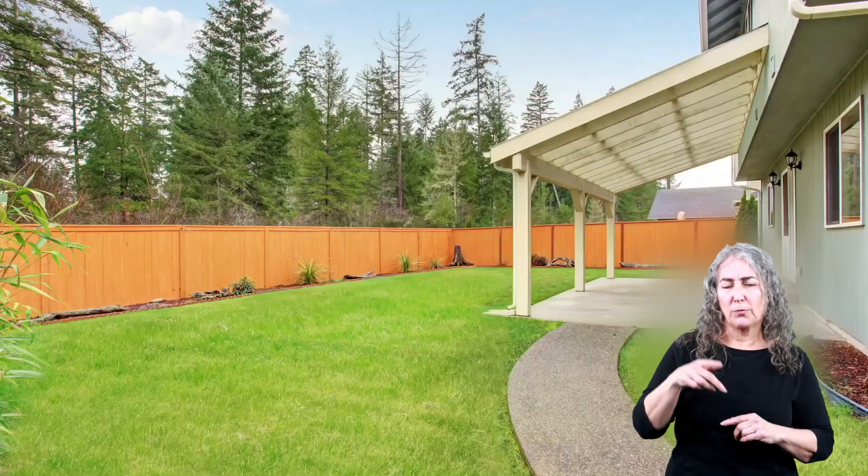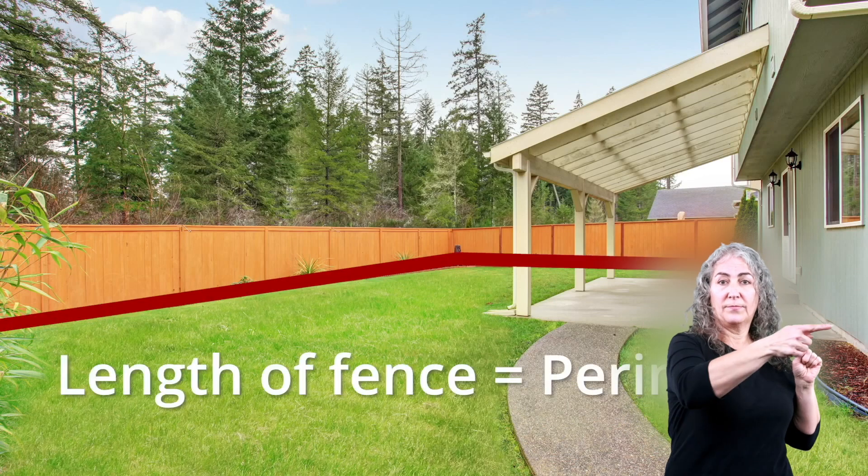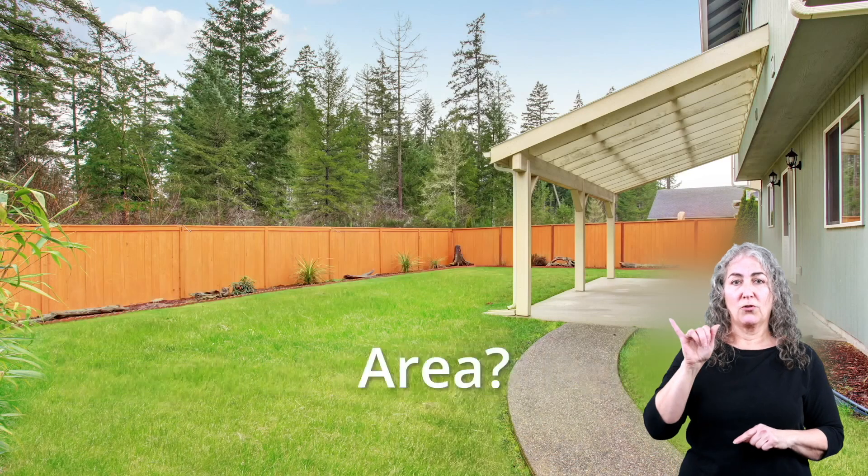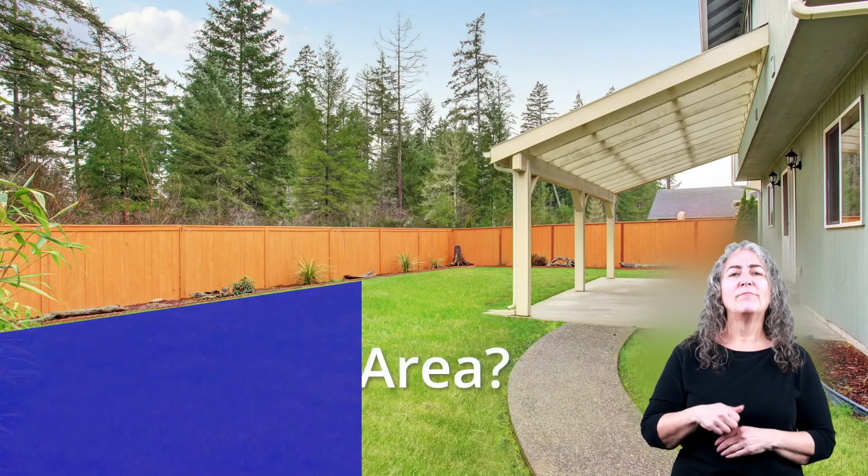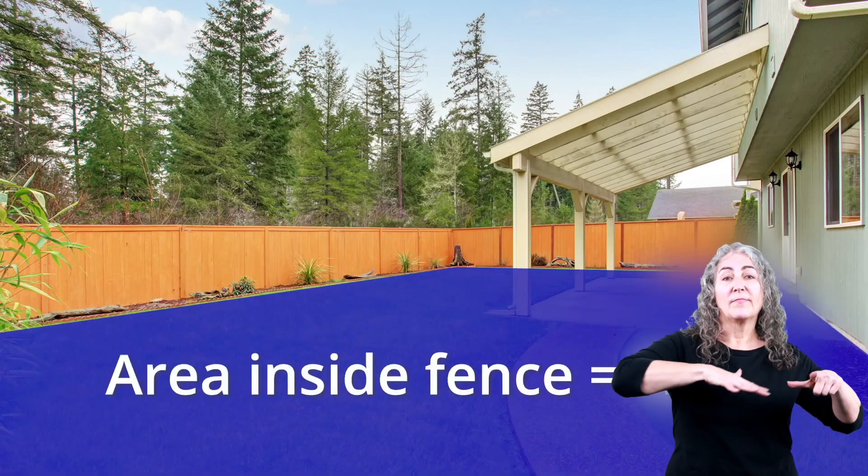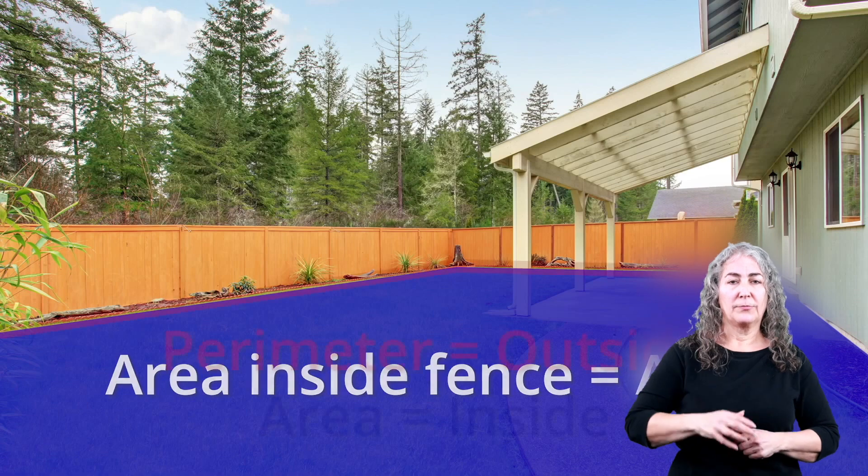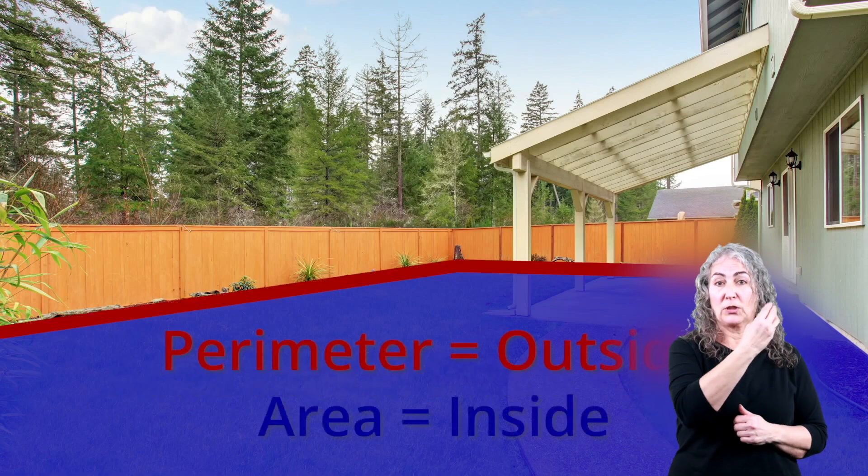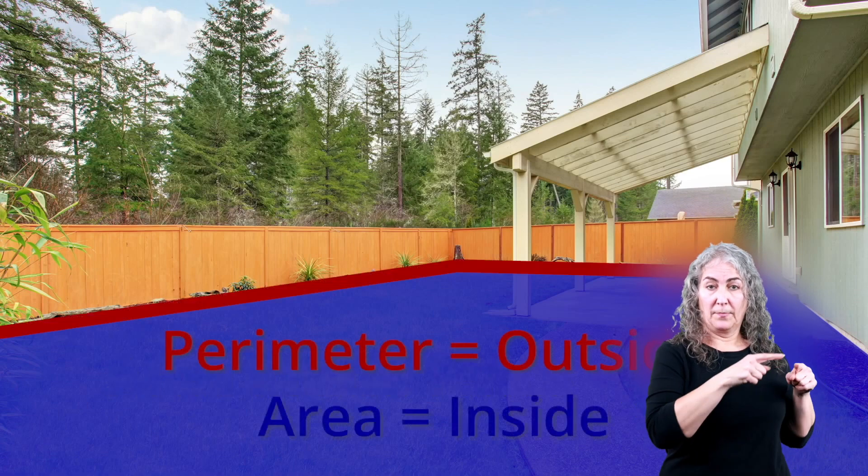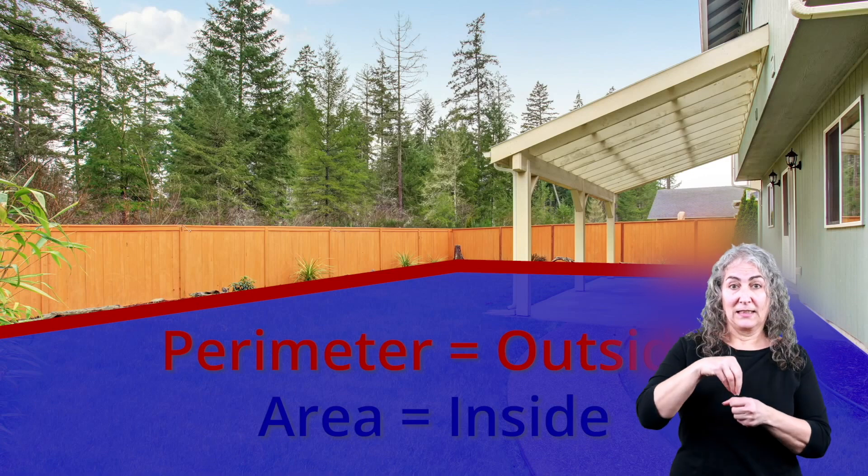Another way to think about it is to picture a fence around a yard. The total length of that fence is the perimeter of the yard. And what about the area? You guessed it, the area is the total space inside the yard. So the perimeter is the distance outside of a shape, and the area is the space inside of it.